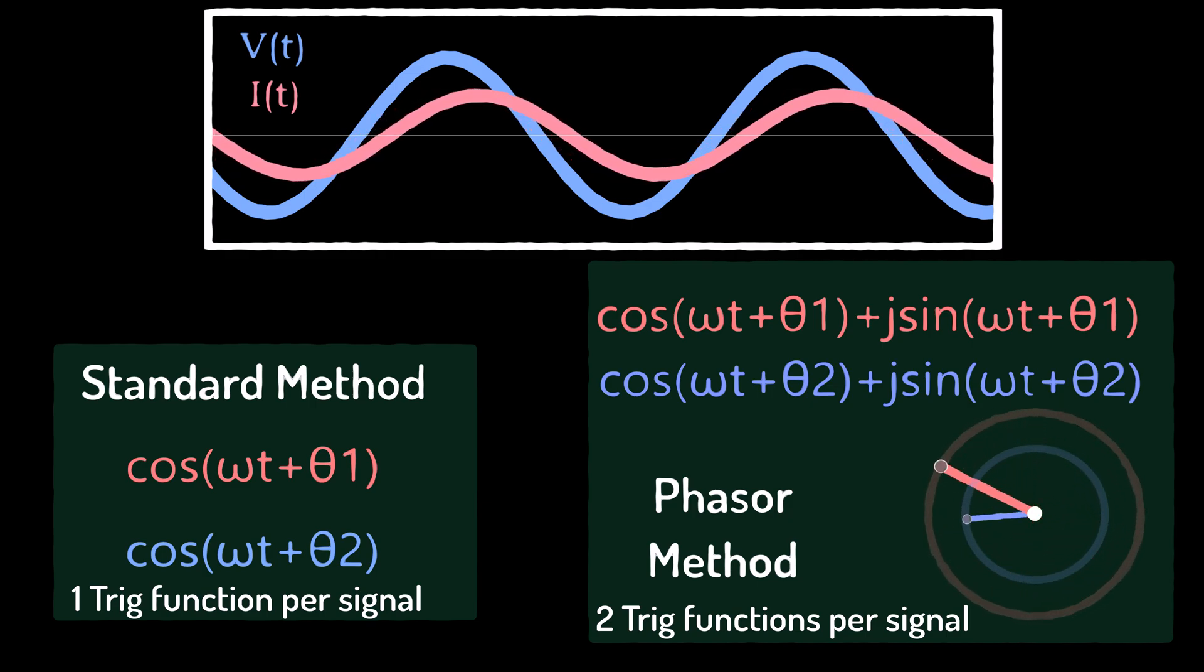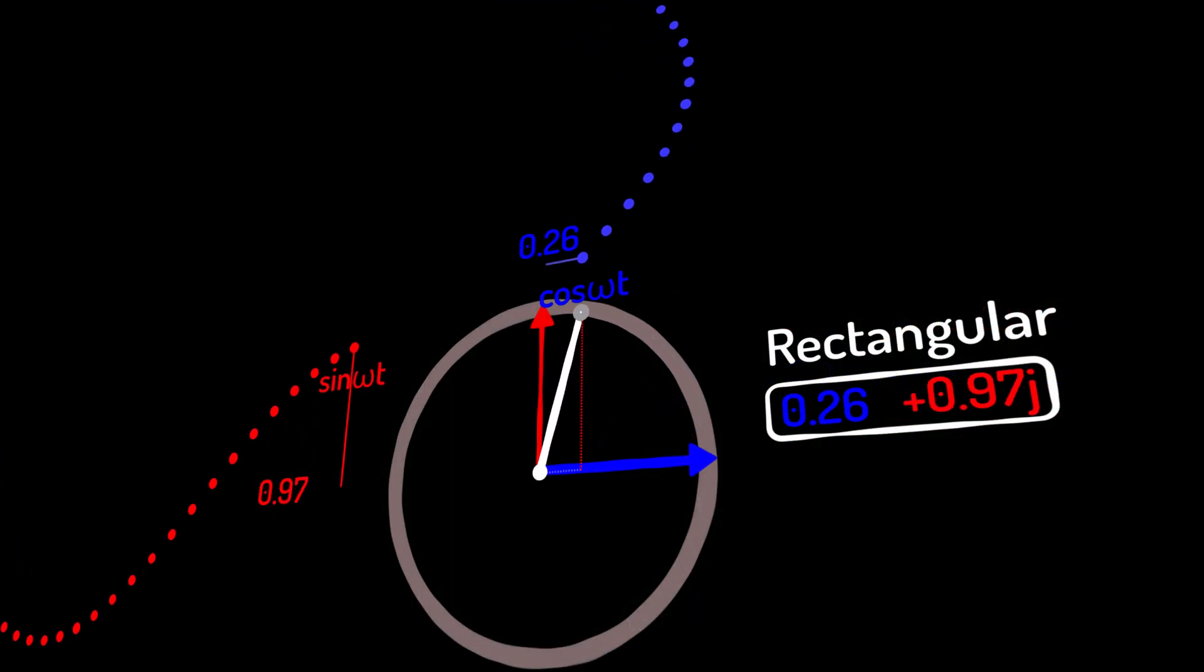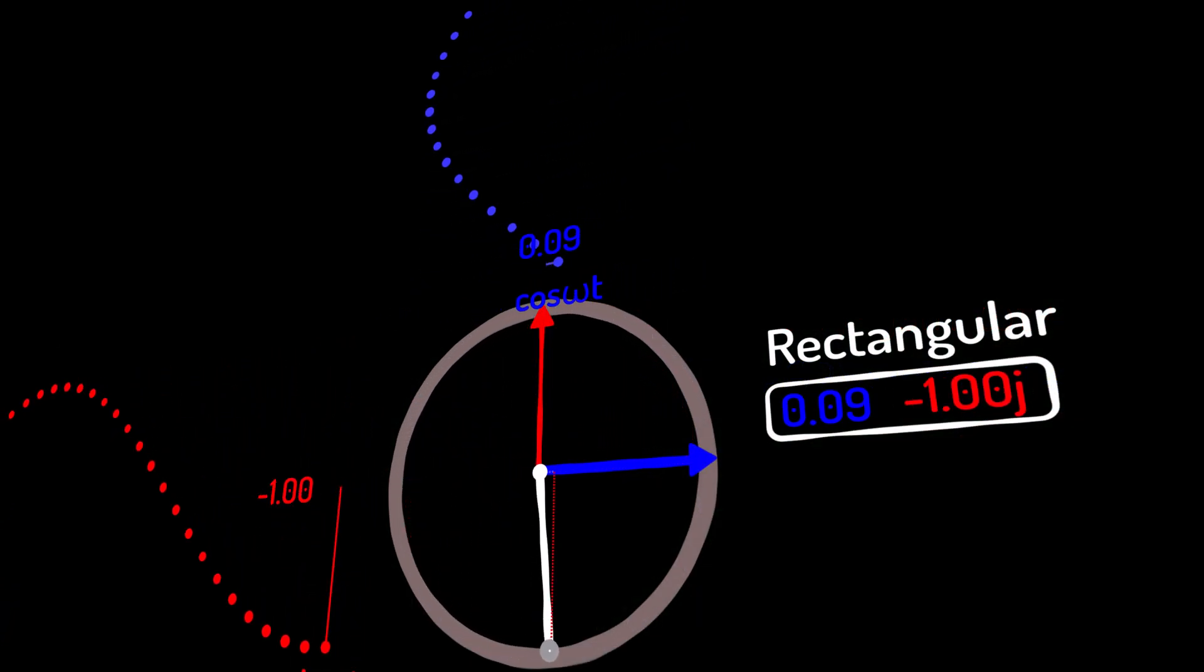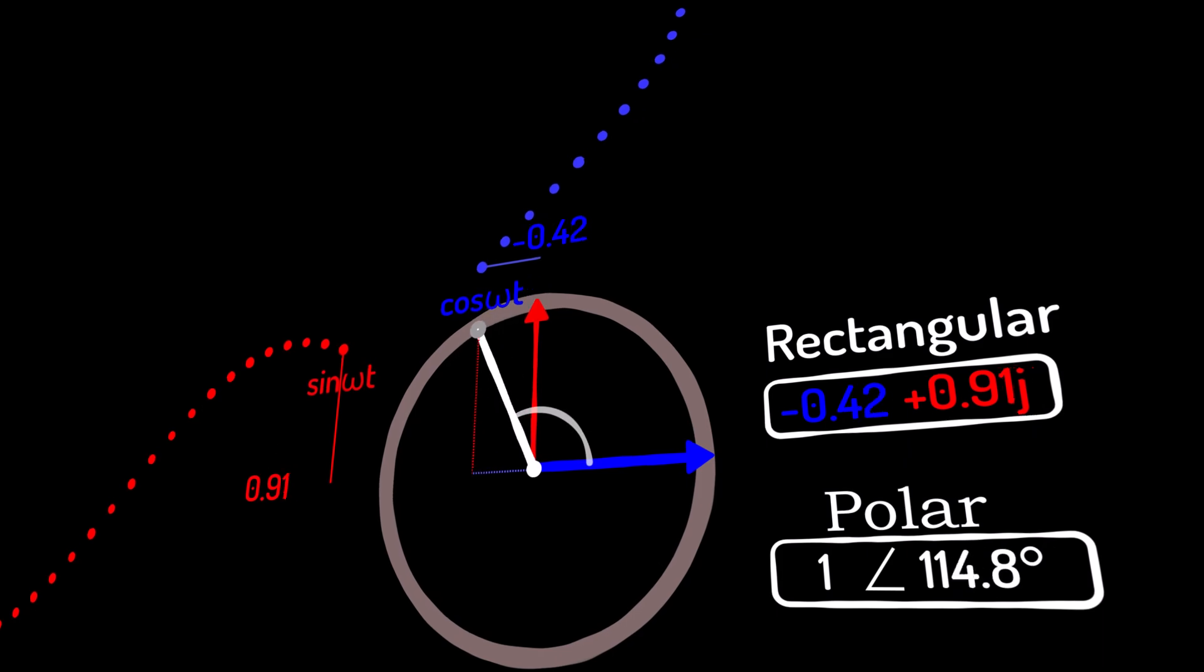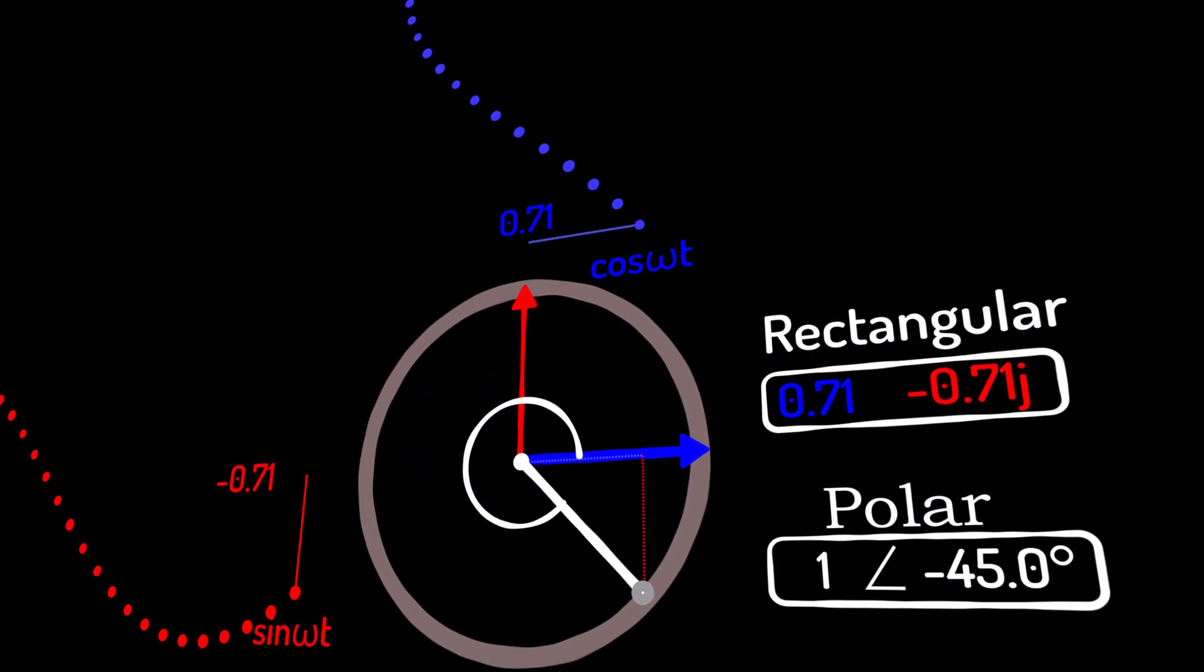Beyond the rectangular notation, we can also model the progression of the phasor using polar notation, which is simply the magnitude of the arrow and its phase.